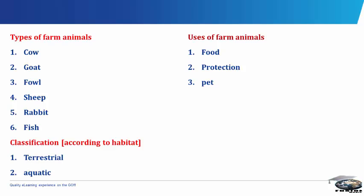Labor. Animals such as horses, donkeys and yaks can be used for mechanical energy. Prior to steam power, livestock were the only available source of non-human labor. They are still used for this purpose in many places of the world, including plowing fields, transporting goods and military functions.